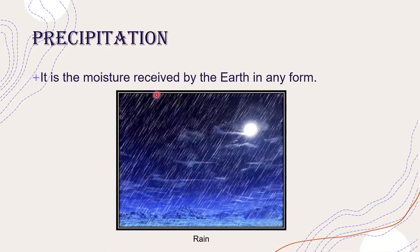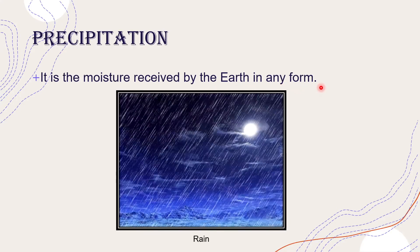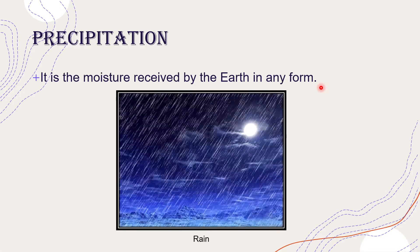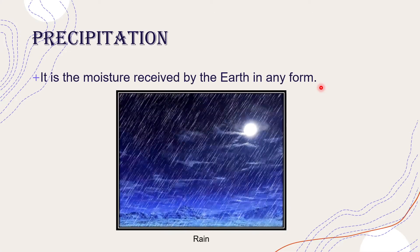Now what do we mean by the term precipitation? In simple words, precipitation refers to the moisture received by the earth in any form. It can be rainfall, drizzle, snowfall, sleet, or hailstones. So there are different types of precipitation — moisture which is received by the earth in any form.